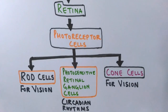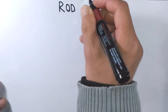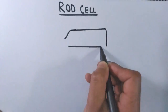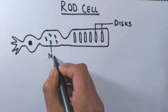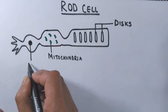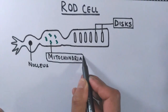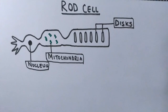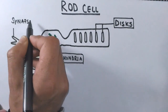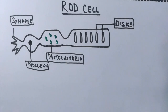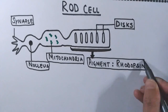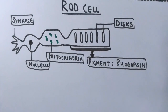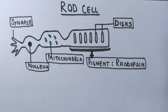If we look at the structure of a rod cell, as the name suggests the shape of the cell is like a rod in 3D. In 2D we can see it has several different structures — it has discs, mitochondria, a nucleus, a terminal, and a synapse from which it receives neurotransmitters to transduce a signal. This rod cell contains a pigment in its discs called rhodopsin, which transduces the signal — it is the photoreceptor pigment that receives the light.